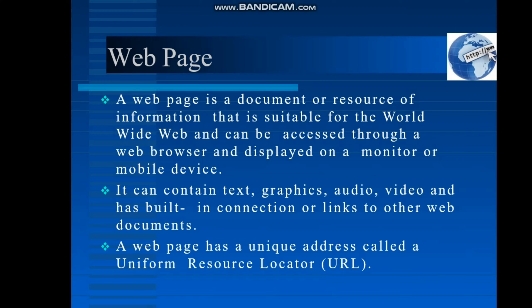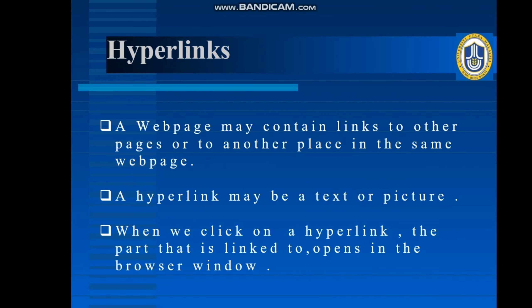Now in these webpages, sometimes we have seen different links. That link might be a text or that might be a picture. So those links are actually known as hyperlinks. These hyperlinks will allow us to go to another page that is related to the current webpage. So a webpage contains some links that allow us to go to other pages related to the current page. That is known as a hyperlink — whenever we are clicking our mouse pointer on that hyperlink, we can go to the other pages correlated to these pages. So this hyperlink may be a text or maybe a picture.